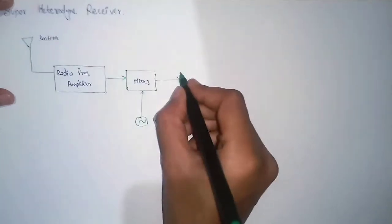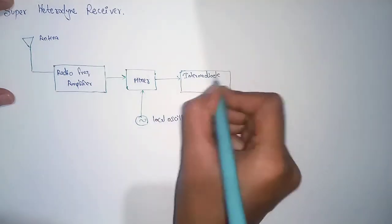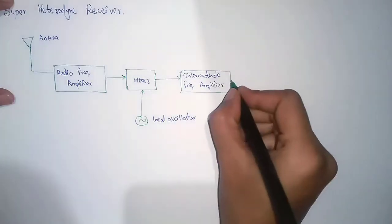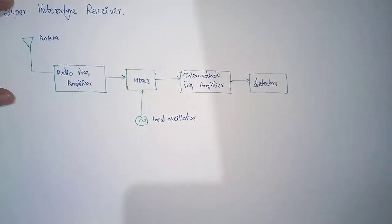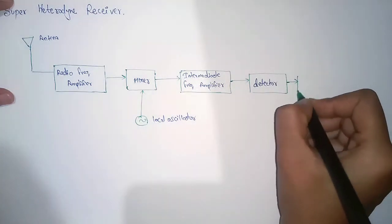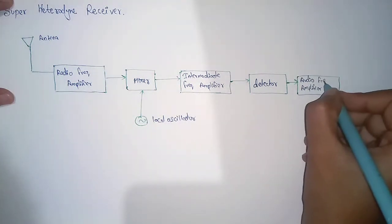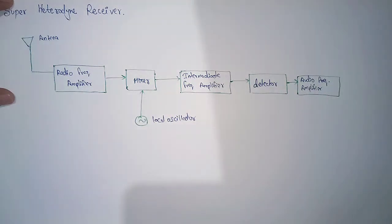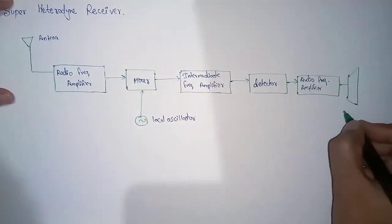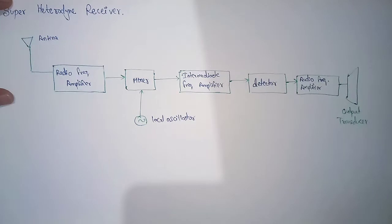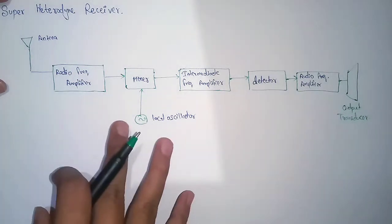Both signals will be passed to the mixer, and then it will be passed to an intermediate frequency amplifier. Then this signal will be sent to a detector where demodulation will occur, and then it will be sent to an audio frequency amplifier. It will be given to a transducer like a speaker or printer or anything. That's it — this is the block diagram for the super heterodyne receiver.